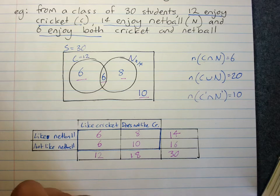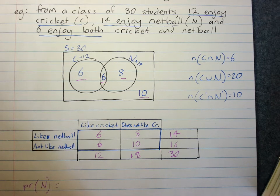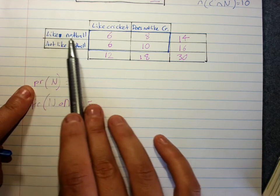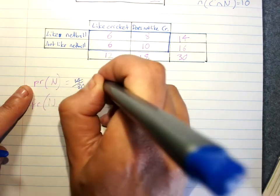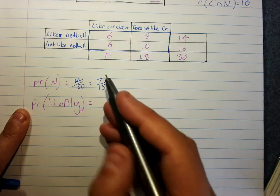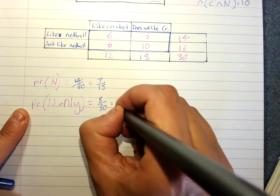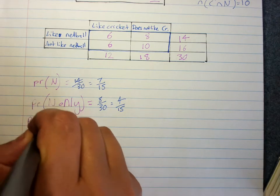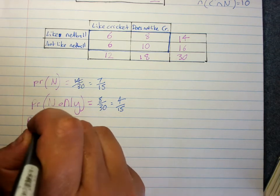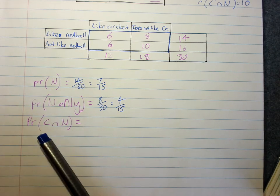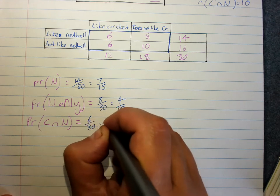If asked for the probability that a randomly chosen student liked netball, that is 14 out of 30. For the probability that a student liked netball only — those who like netball but not cricket — that is 8 out of 30. We might also be asked for the probability of a student liking both. Use correct notation: write the intersection of C and N, not just 'both.' The probability that a student likes both cricket and netball is 6 out of 30, which is one-fifth.